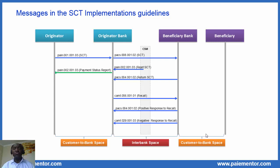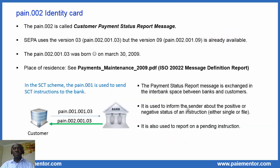Now let's take a closer look at the PAIN.002 identity card. The PAIN.002 is called the customer payment status report message. In SEPA, version 3 is used, but version 9 is already available in the ISO 20022 standards. So the ISO 20022 standard is six versions ahead of SEPA. The PAIN.002 is a message exchanged in the customer-to-bank space between the debtor bank and his customer, the debtor.